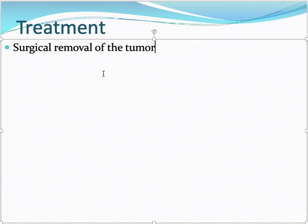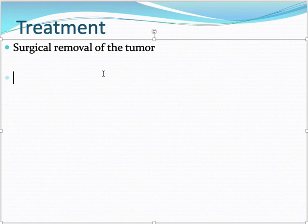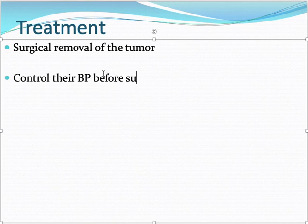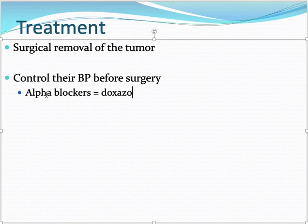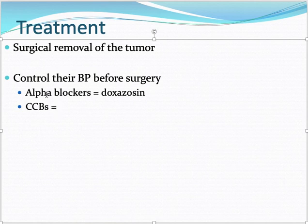Before surgery, we must first stabilize the patient, as surgery cannot be performed on an unstable patient. Pre-operative preparation is very challenging. Controlling blood pressure before surgery is very important, so doctors give alpha blocker drugs. Calcium channel blockers can also be given, as well as IV phentolamine.